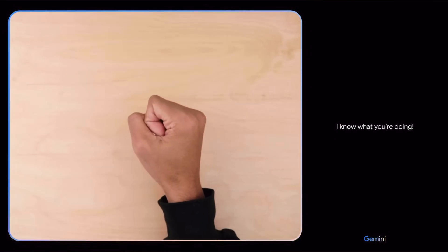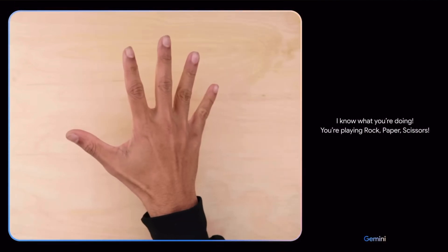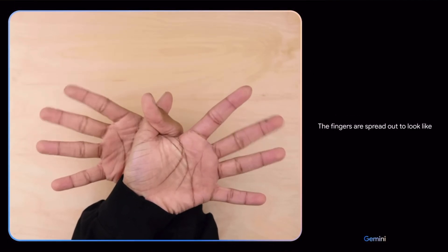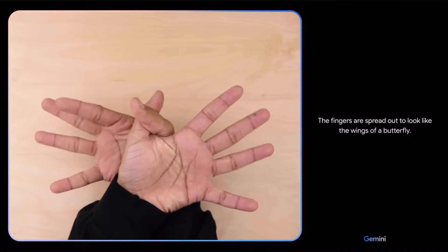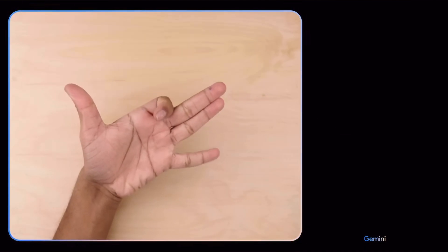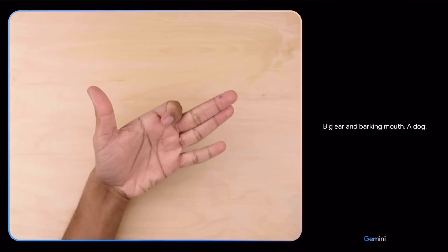I know what you're doing. You're playing rock, paper, scissors. What do you see now? The fingers are spread out to look like the wings of a butterfly. What's this? Big ear and barking mouth. A dog. Sweet.